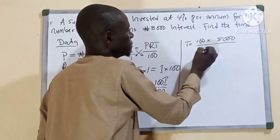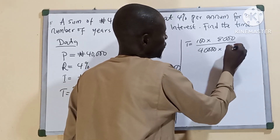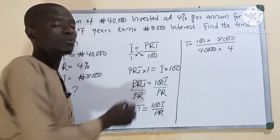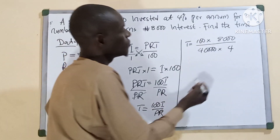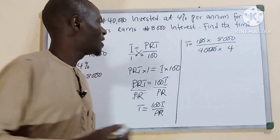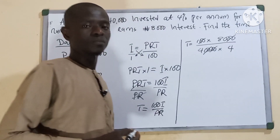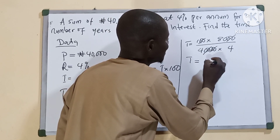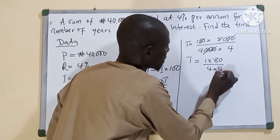Now substituting the values — P is 40,000 and R is 4. I hope we are following. We cancel the zeros and simplify. So T equals 1 times 80 all over 4 times 4. I hope we are following.